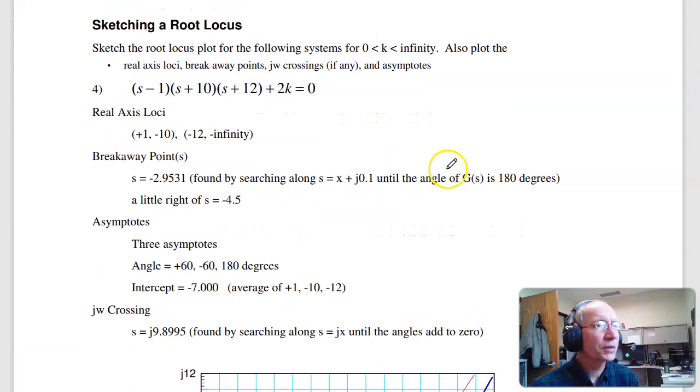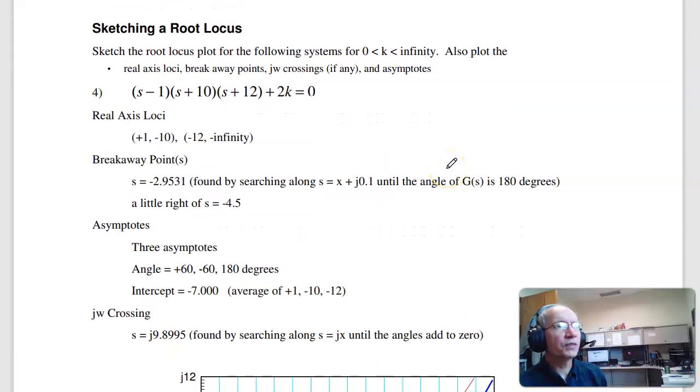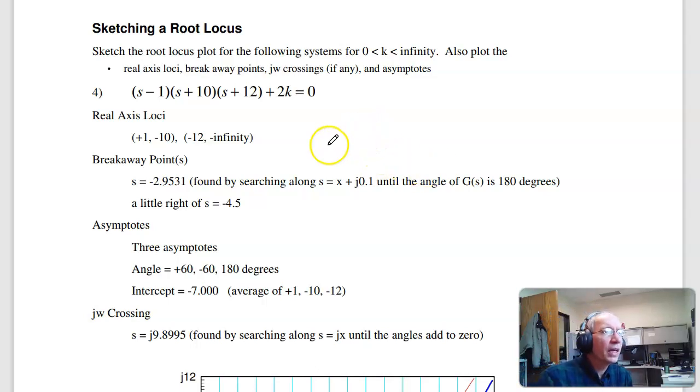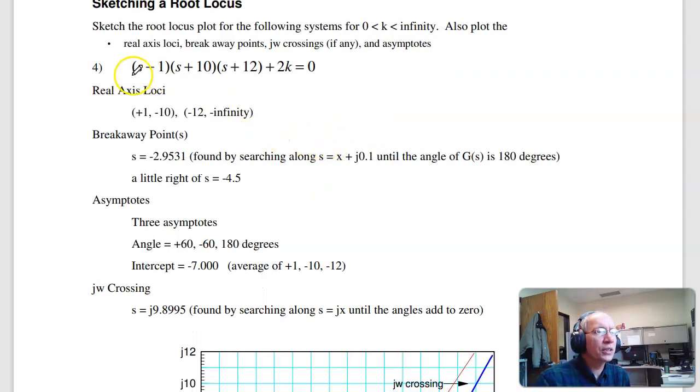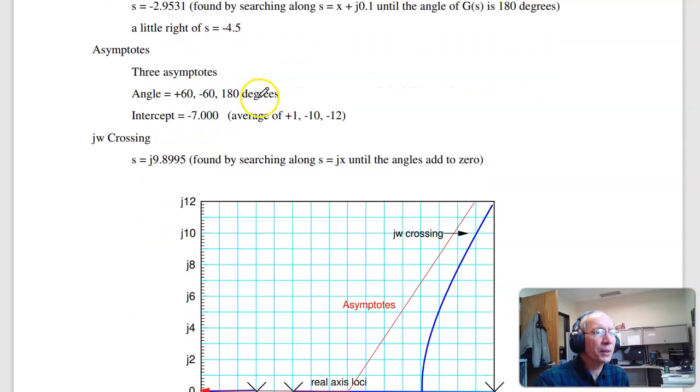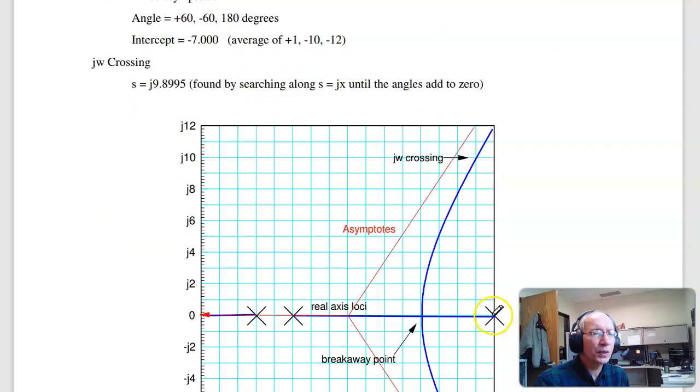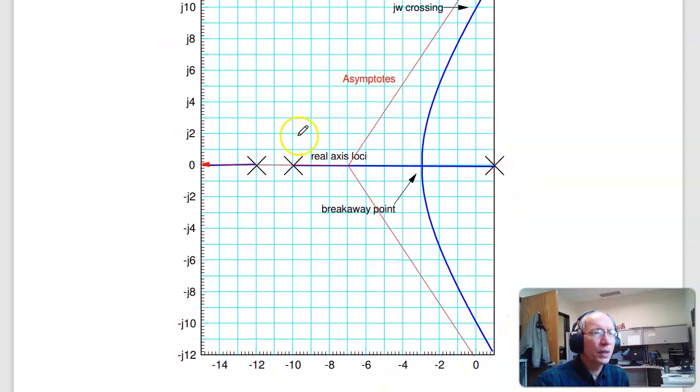Root locus plots. Let's sketch the root locus for the following system. What I do is I start with the open loop poles. I've got a pole at plus 1, minus 10, minus 12. So there's plus 1, minus 10, minus 12. Real axis loci when there's an odd number of poles to the right.